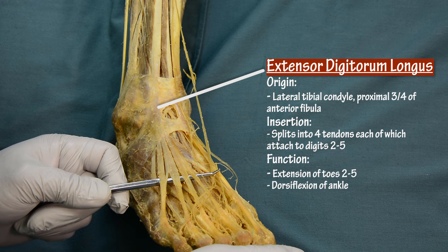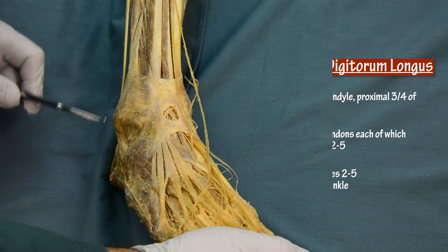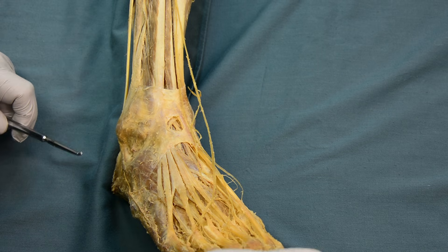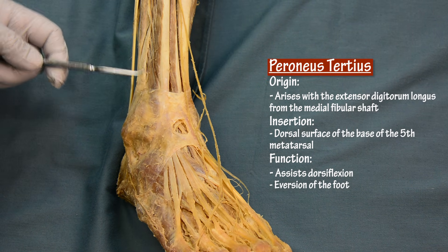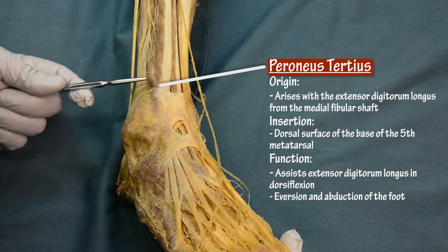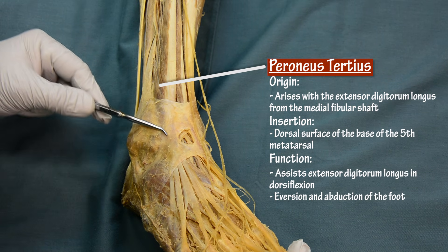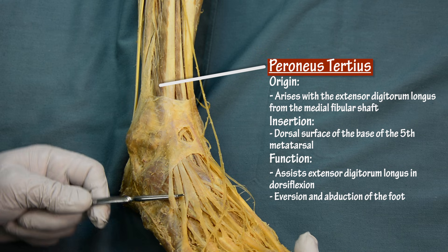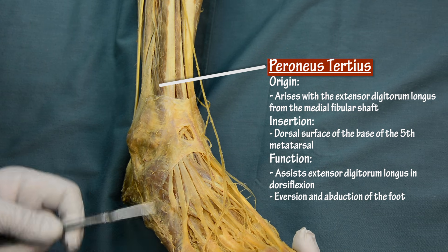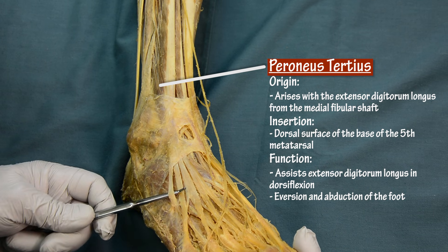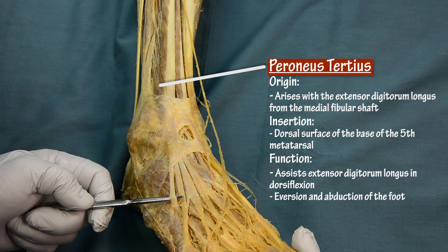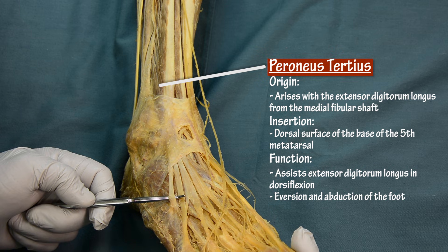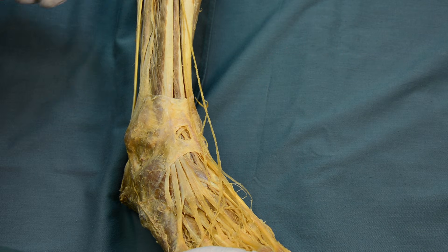The last muscle, but not the least, is fibularis tertius, also called peroneus tertius. This muscle is actually part of the extensor digitorum longus, but when we trace its tendon all the way down, it inserts to the fifth metatarsal bone. That is fibularis tertius or peroneus tertius. That covers all the muscles of the anterior leg.